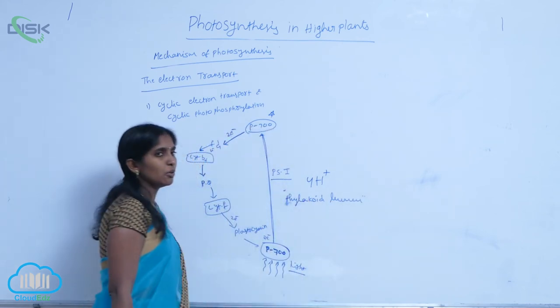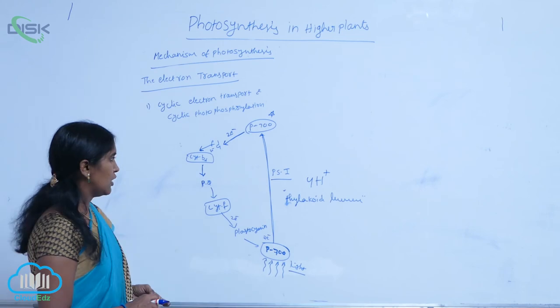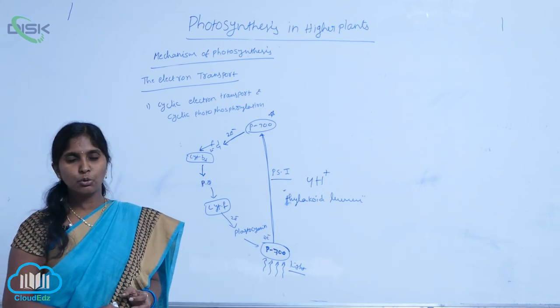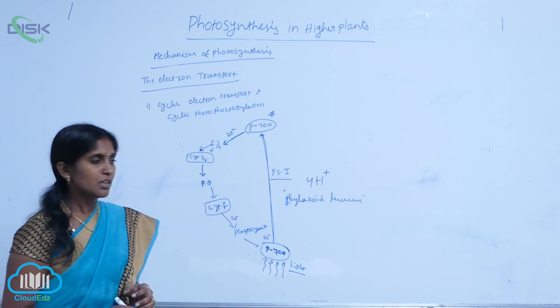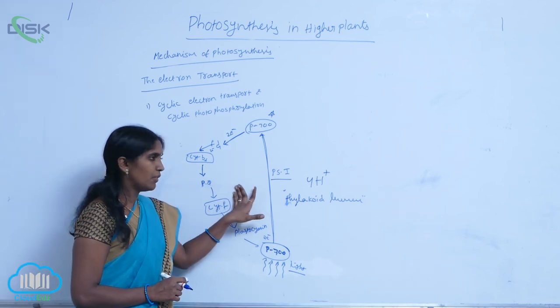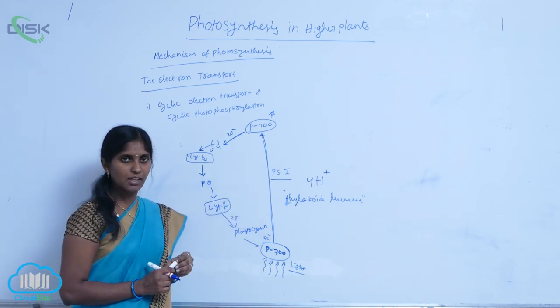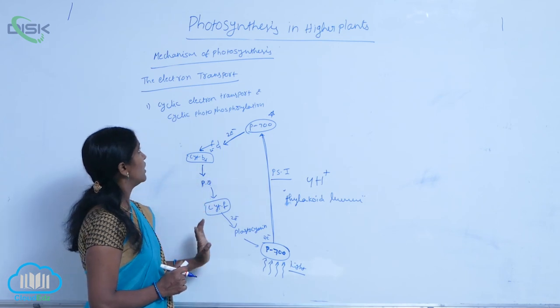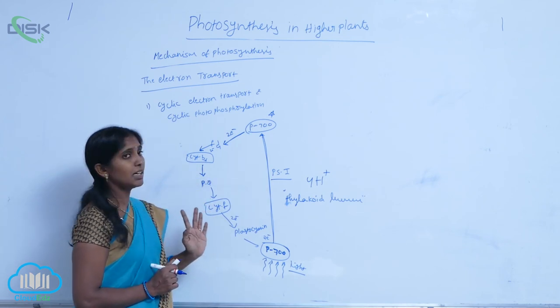According to chemiosmotic theory, three protons can produce one ATP. Therefore, one ATP is released in this process. This is how cyclic electron transport works.